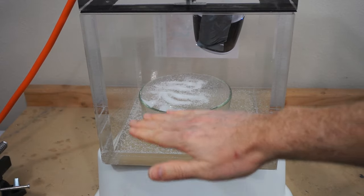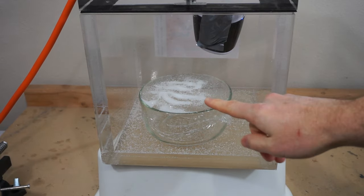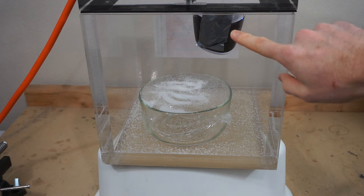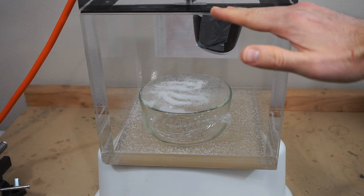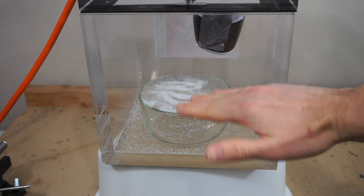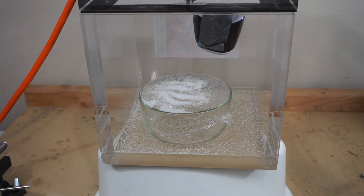I have some saran wrap over a bowl to make a diaphragm, and I have some salt on here. So I'm going to play a tone on my Bluetooth speaker, and it's going to make high and low pressure waves go through the air that'll vibrate the diaphragm and vibrate the salt on top.